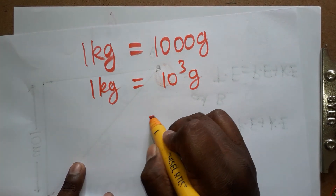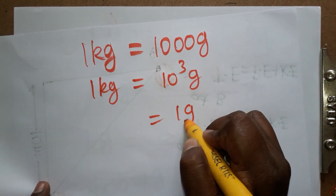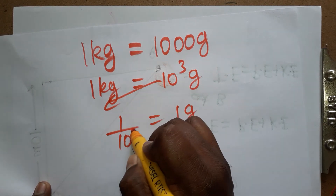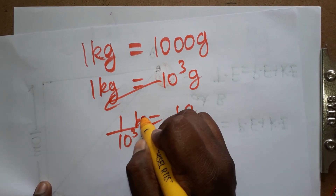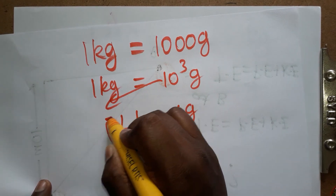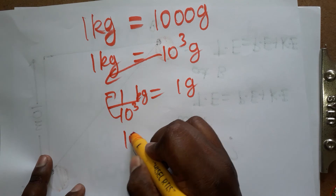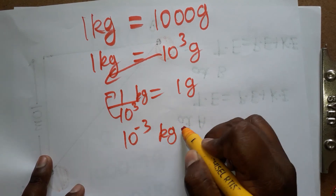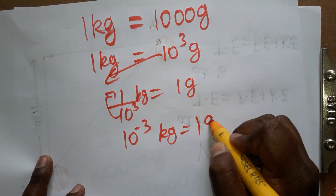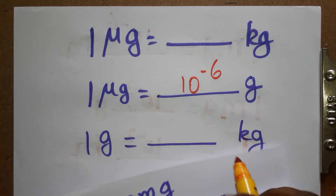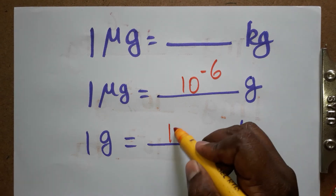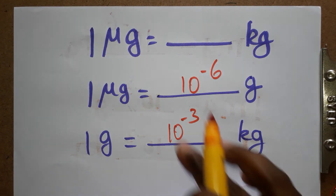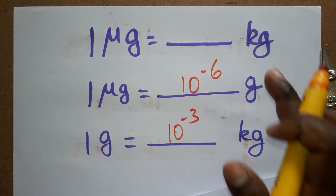If we want one gram in terms of kilograms, we bring 10³ to the denominator: one gram equals one divided by 10³ kilograms. Moving to numerator, that becomes 10⁻³ kilograms. So one gram is equal to 10⁻³ kilograms.